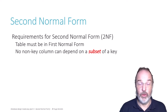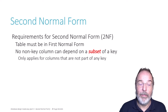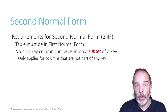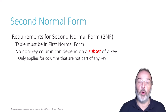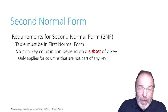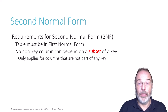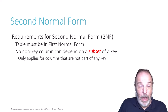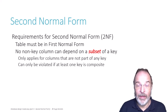We will illustrate this with an example, but it is important to realize that it says no non-key column — that means this only applies for columns that are not part of any key. Every column that is included in at least one candidate key can by definition never violate second normal form. Also, in order to depend on a subset of a key, such a subset must exist. That can only happen if that key is composite — it has to span at least two columns.